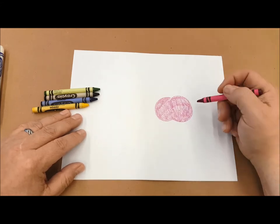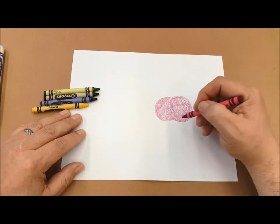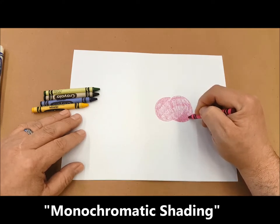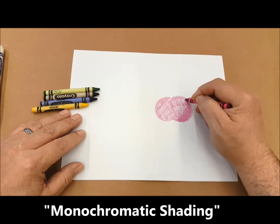Now that I've got it colored in, I can do something like shading. I could shade with the same color just by pressing a little bit harder and maybe I can make it look shaded on that side.